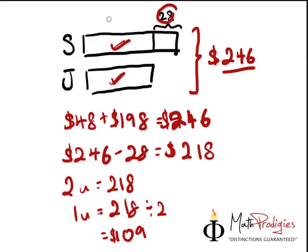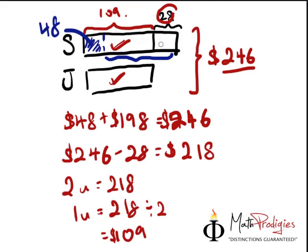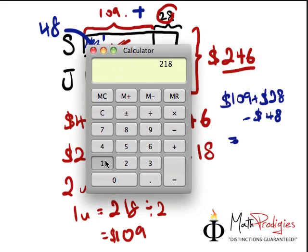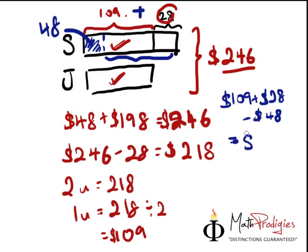In other words, Sammy has to end up with $109 plus $28. But right now he only has $48. So the question is asking: how much extra does he need? All you have to do is take $109 plus $28 minus $48. Using our calculator: $109 plus $28 minus $48 gives you $89. So Jonathan has to give Sammy $89 in order for Sammy to have $28 more than him.